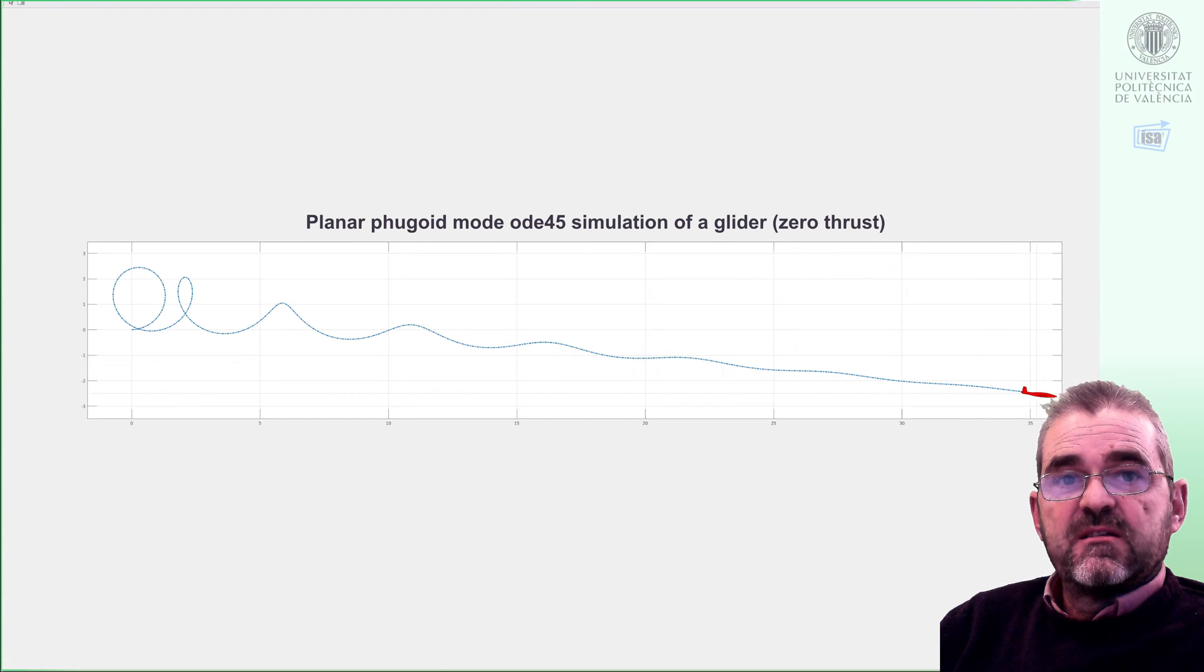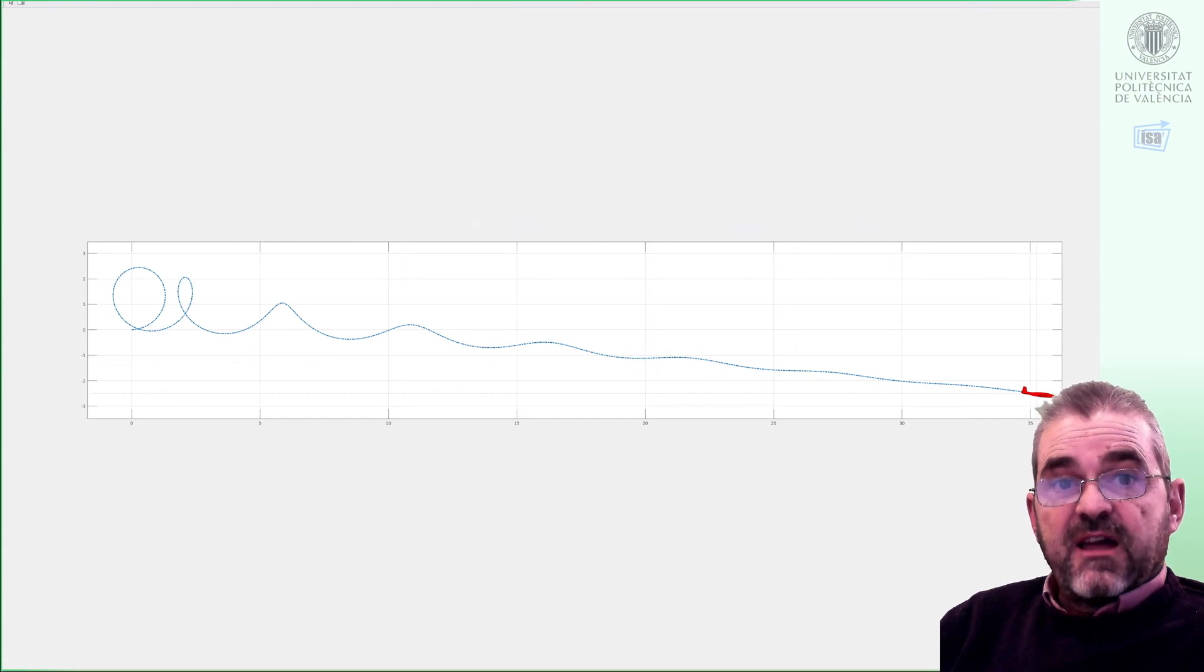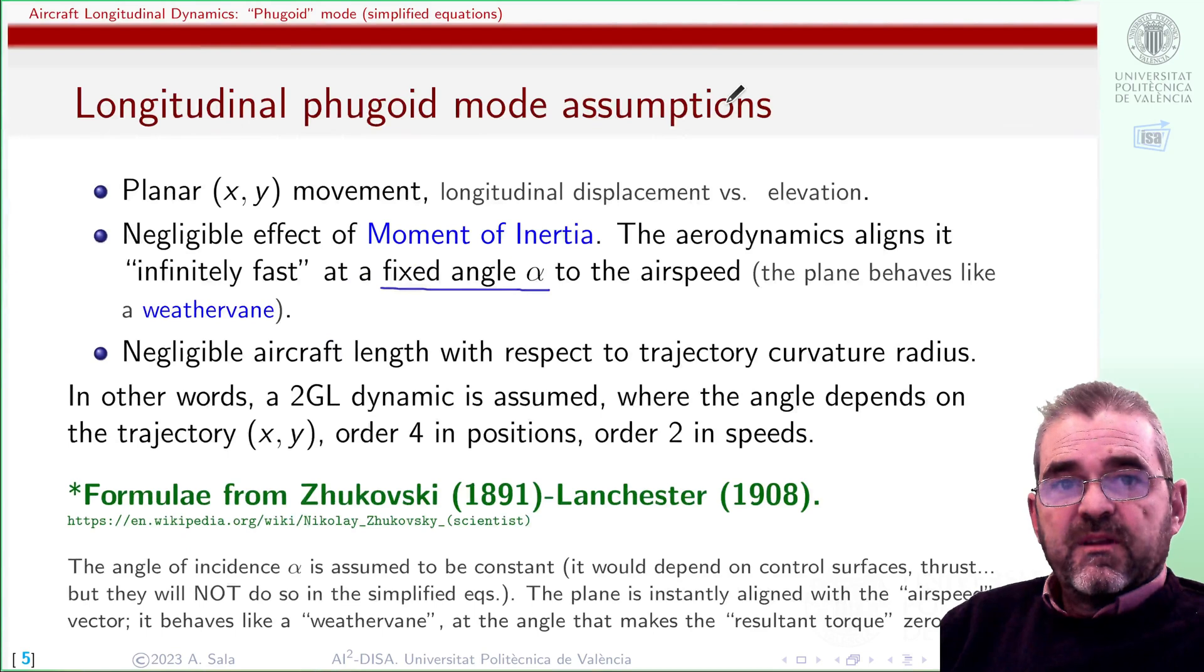To achieve this gliding, the third angular degree of freedom will be, weather vane-like, 20 times faster than this other movement, so we will neglect the effects of the airplane rotational inertia. This is the key assumption, and of course we are going to consider planar movement.